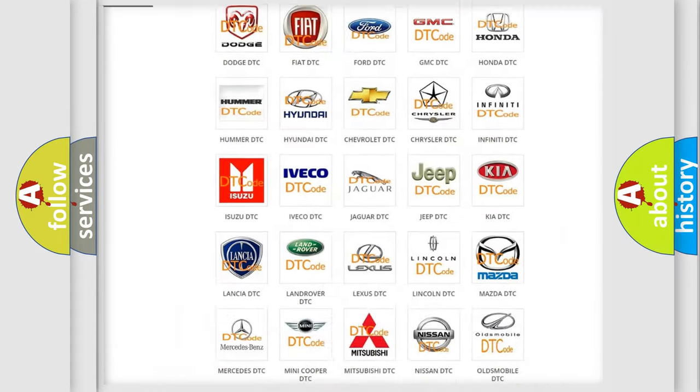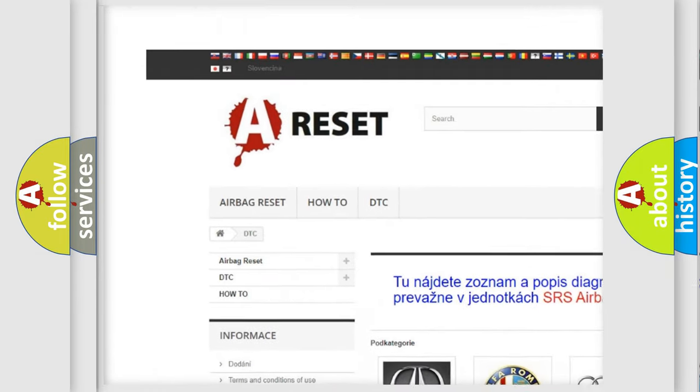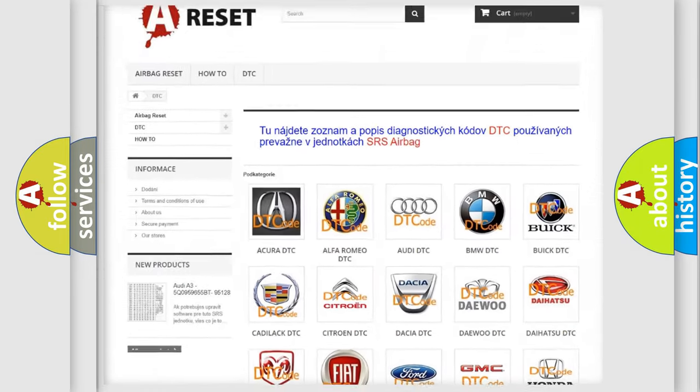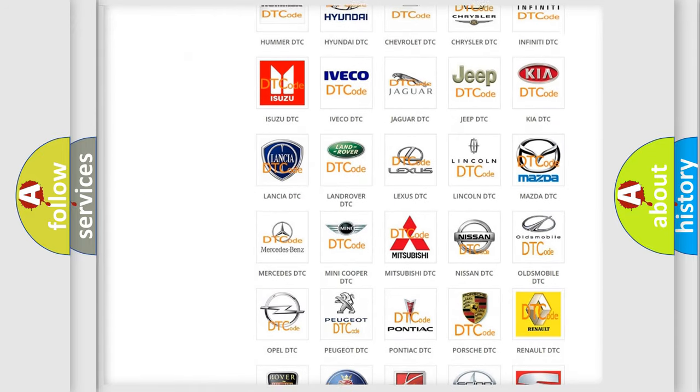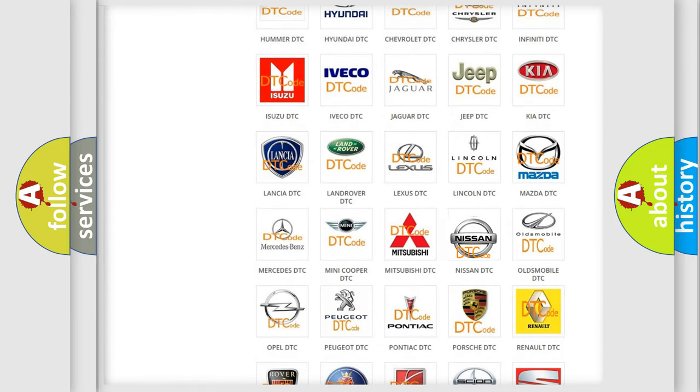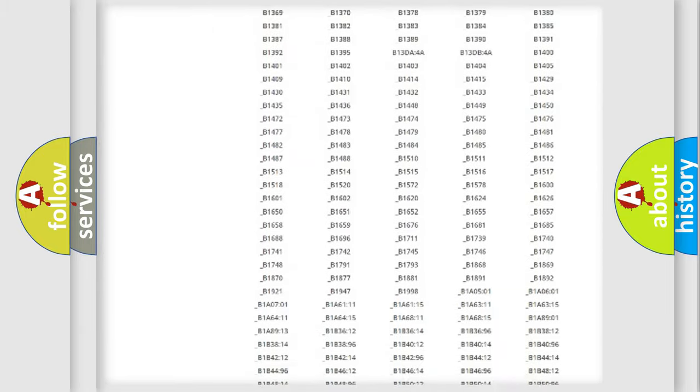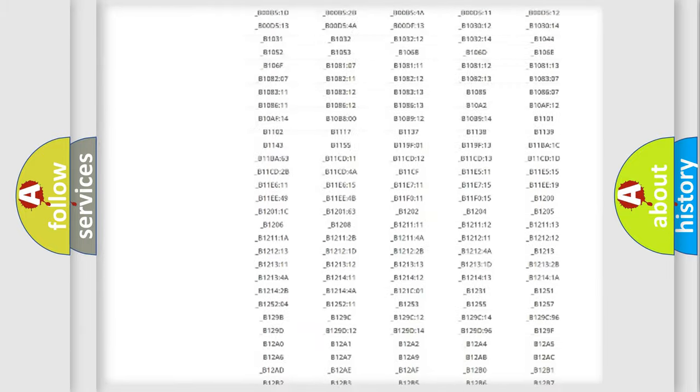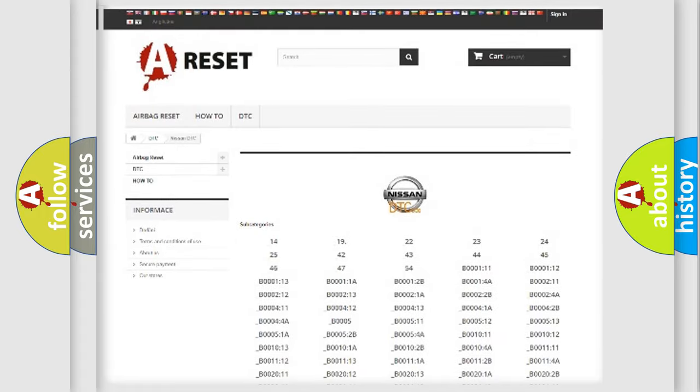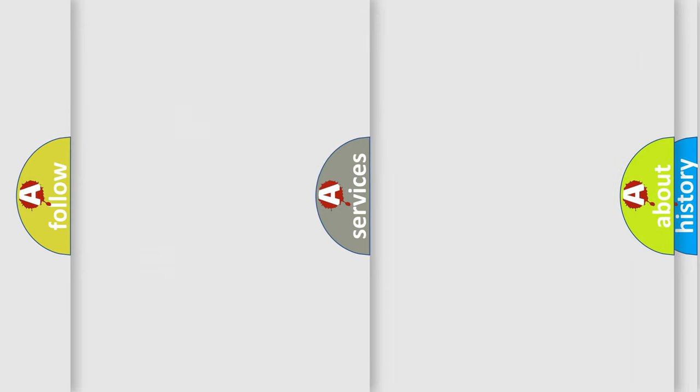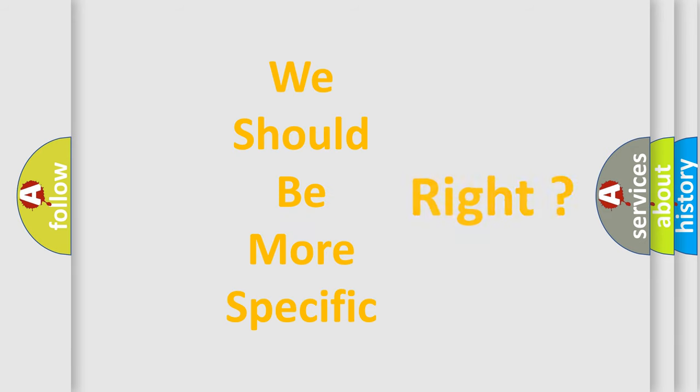Our website airbagreset.sk produces useful videos for you. You do not have to go through the OBD2 protocol anymore to know how to troubleshoot any car breakdown. You will find all the diagnostic codes that can be diagnosed in Nissan vehicles, and many other useful things.